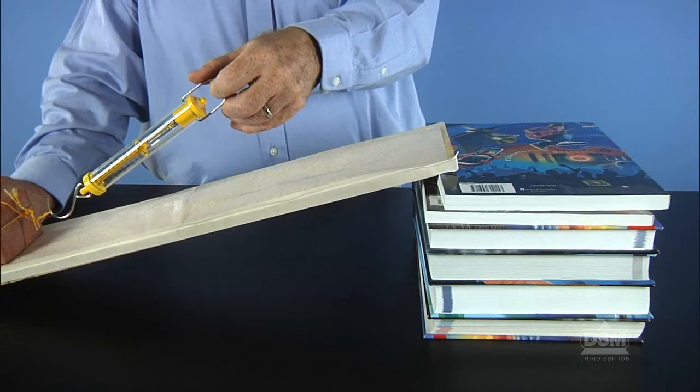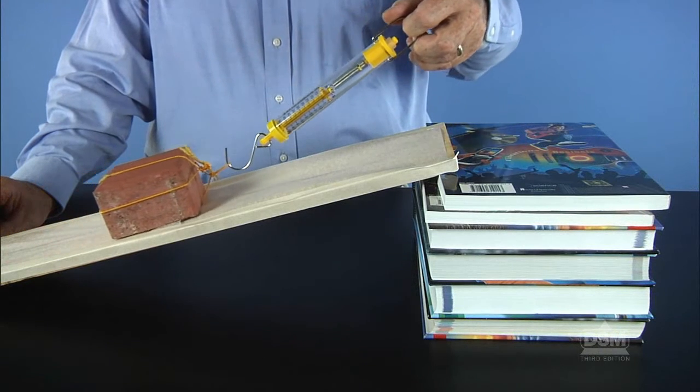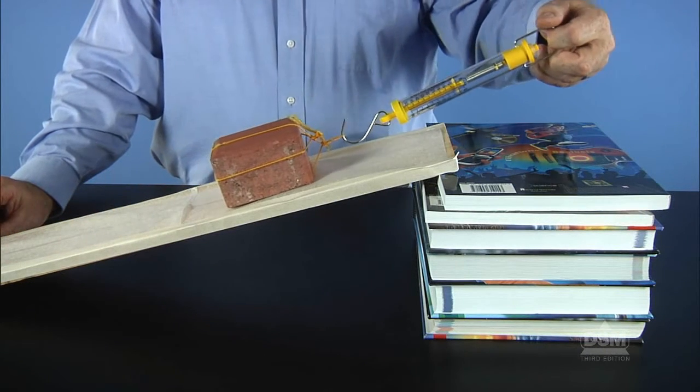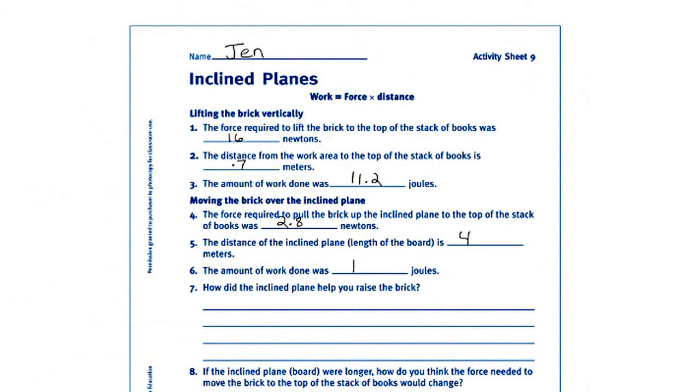Students should then prop one end of the wooden board on the stack of books. Demonstrate how to use the spring scale to pull the brick up the inclined plane and how to hold the spring scale so that it is parallel to the board. Students should record the force required to move the brick and the distance the brick traveled, then calculate the amount of work that was accomplished in this case. Tell students to record their results on the activity sheet.